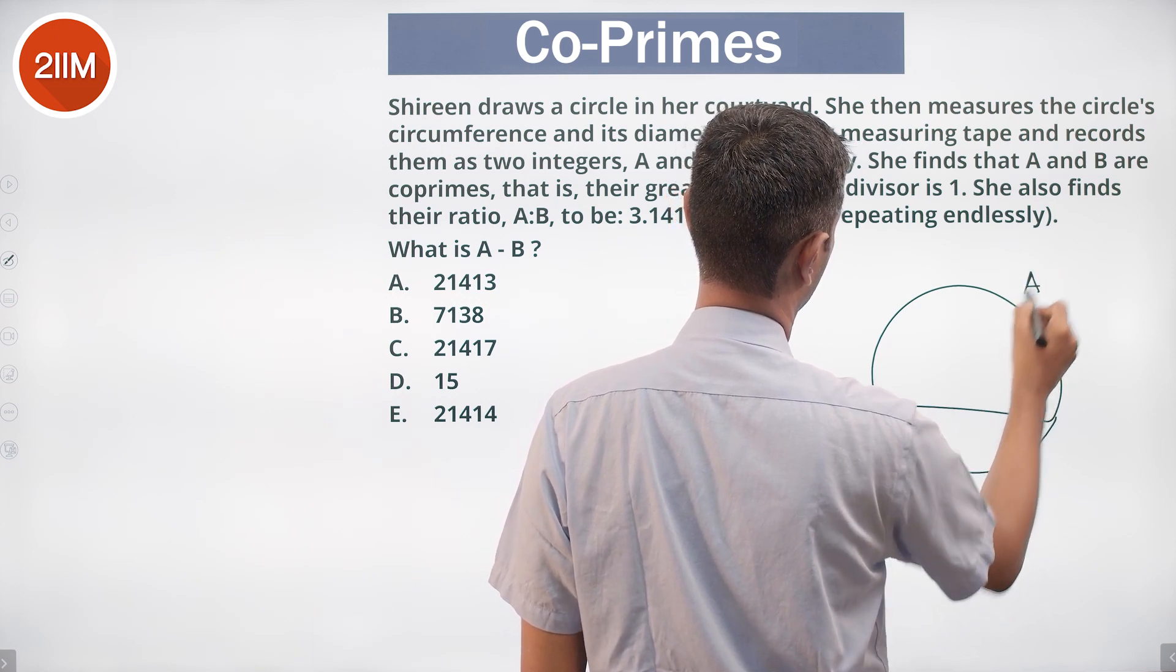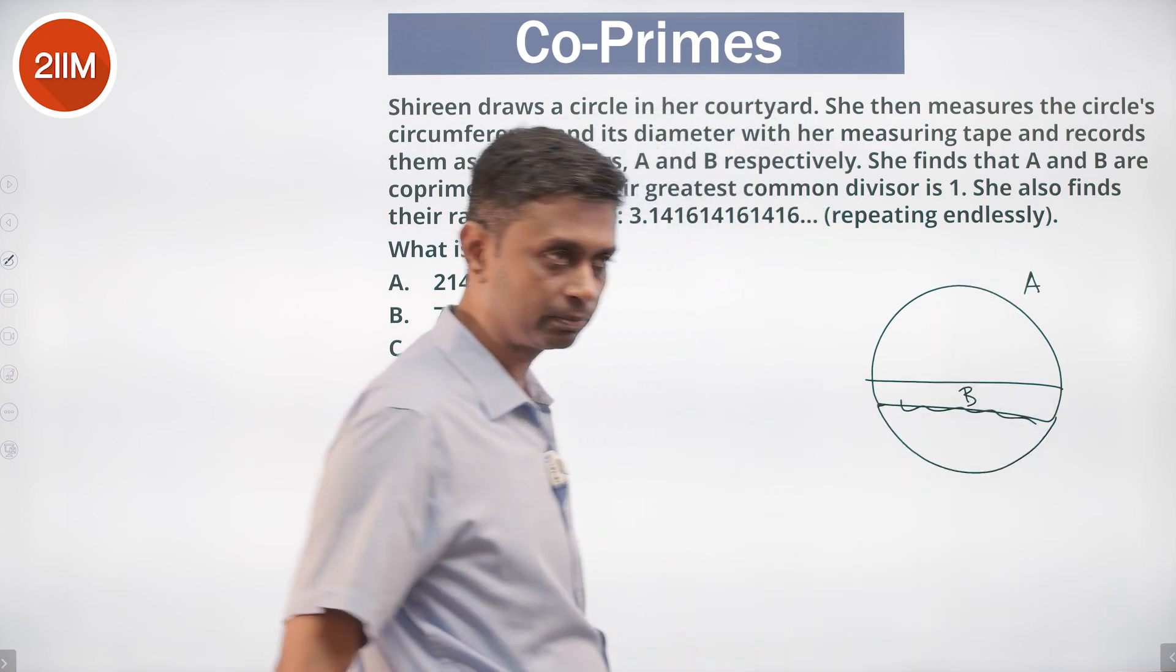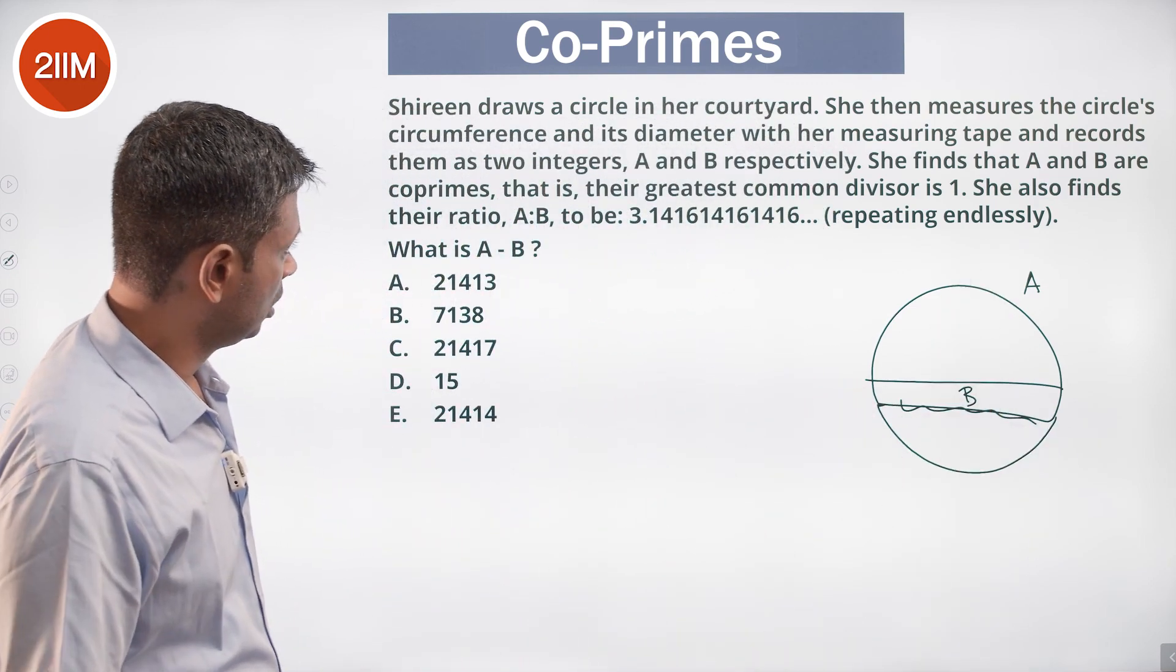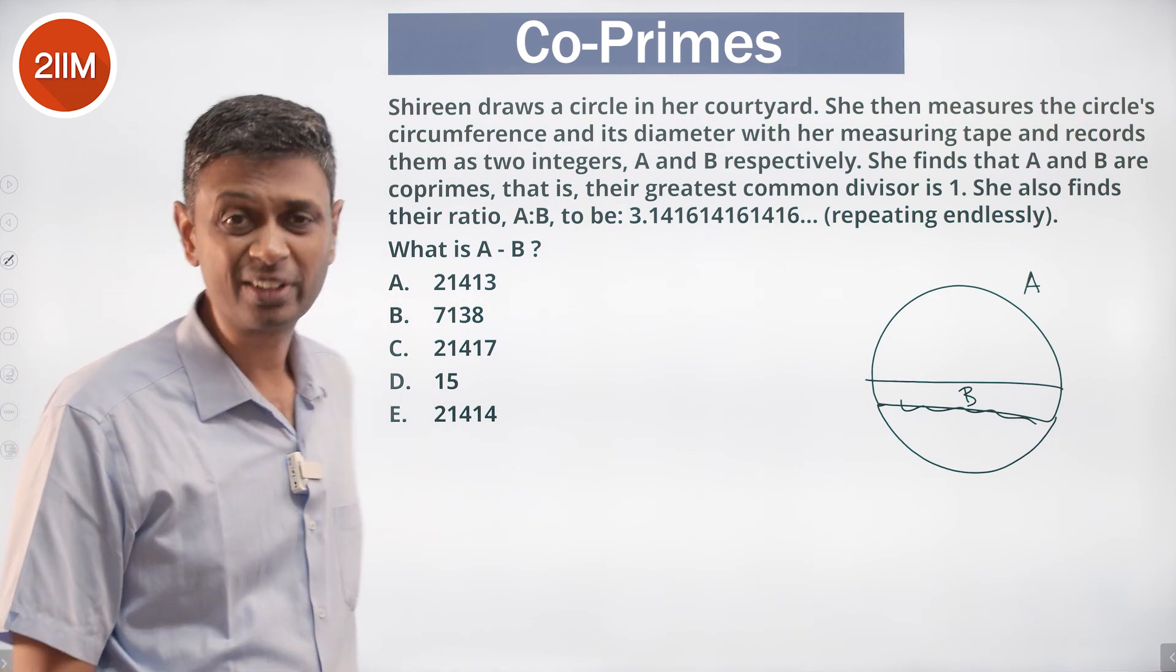Circumference is A, diameter is B. This doesn't look like a diameter but call it the diameter. She also finds A to B to be 3.141614161416... How lovely.